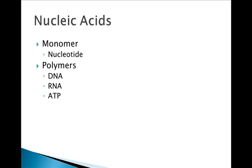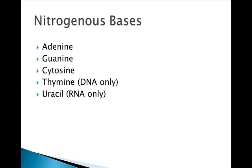The monomer unit for a nucleic acid is called a nucleotide, and the polymers include DNA, RNA, and ATP. There are five nitrogenous bases for nucleic acids. Adenine, guanine, cytosine, and thymine are all found in DNA, while adenine, guanine, cytosine, and uracil are found in RNA.